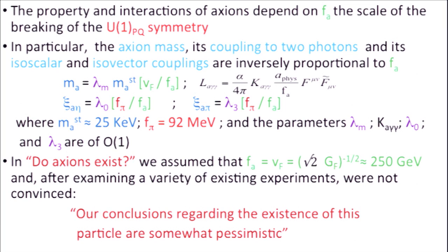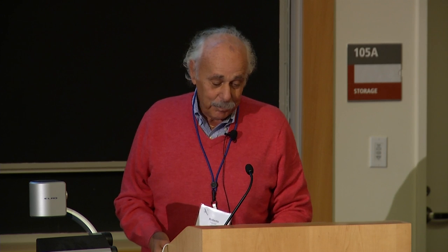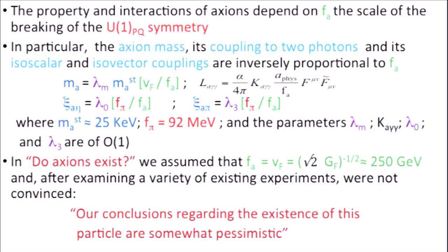In our paper, we assumed — which was very natural at that point — that the scale was the same as the weak interaction scale, about 250 GeV. We wrote this paper very carefully; Stuart wrote quite a bit of it. And this is a sentence from the paper which I'm sure came from Stuart, because he didn't believe a word that these things really existed: 'Our conclusion regarding the existence of the SPARCO are somewhat pessimistic.'